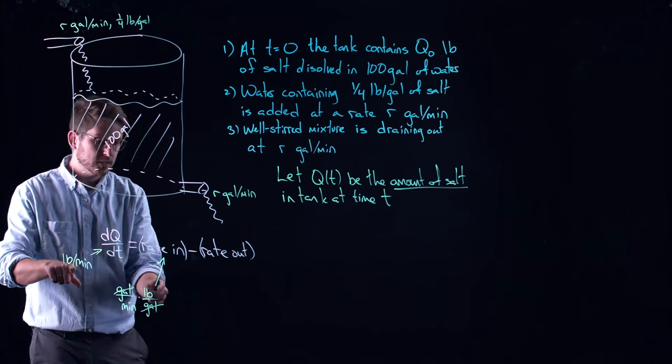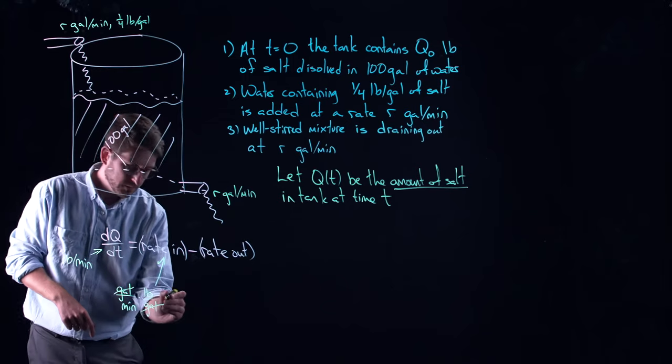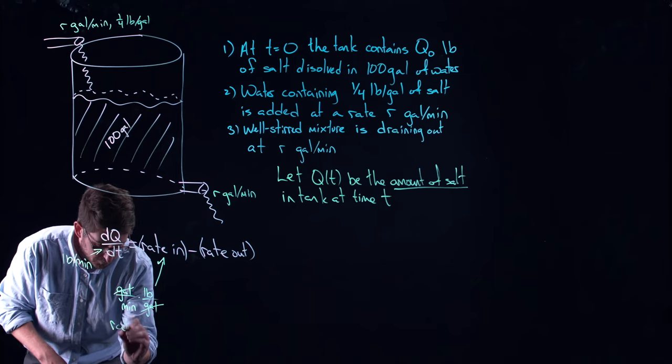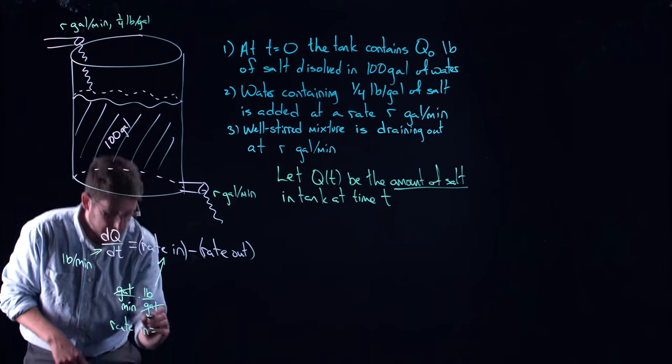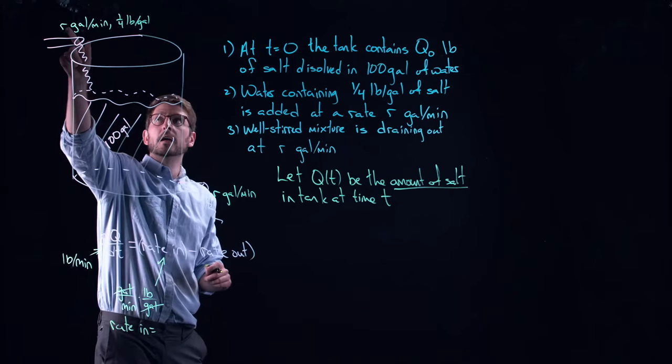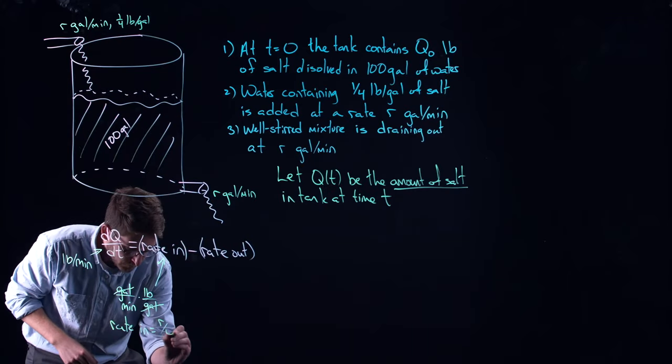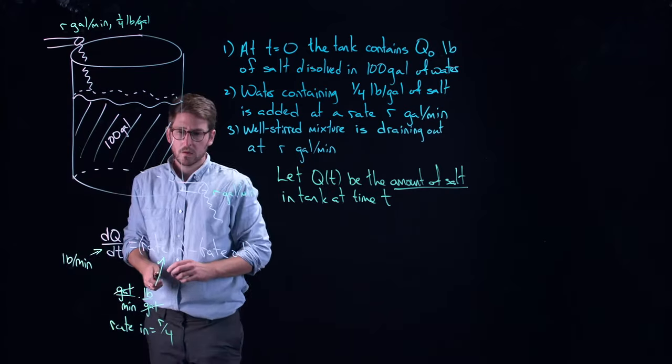Pounds per minute is exactly what we wanted. So that means that the rate in here is going to be, so rate in, let's put it down here, rate in is equal to, multiplying these two things together, R over four.